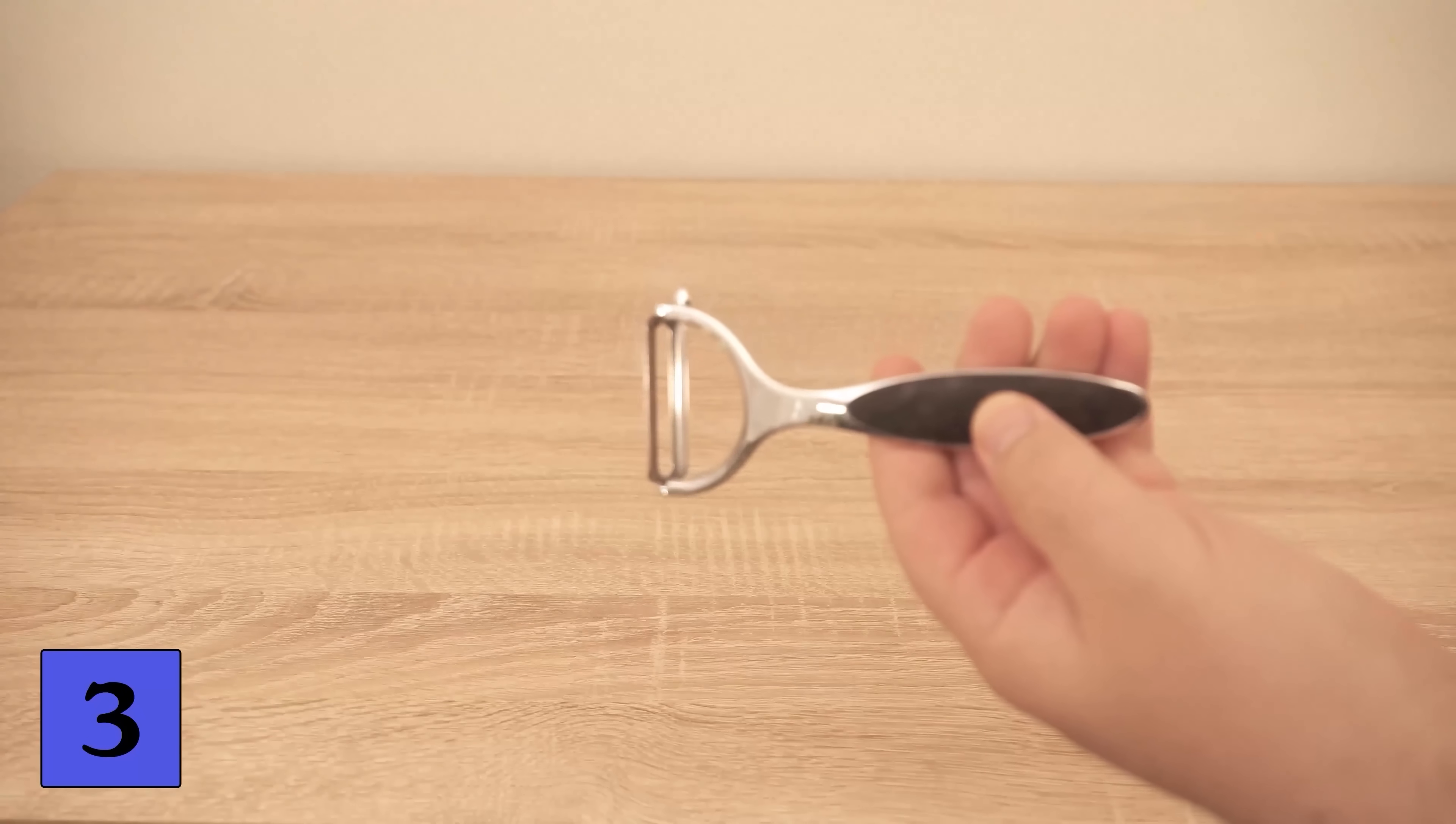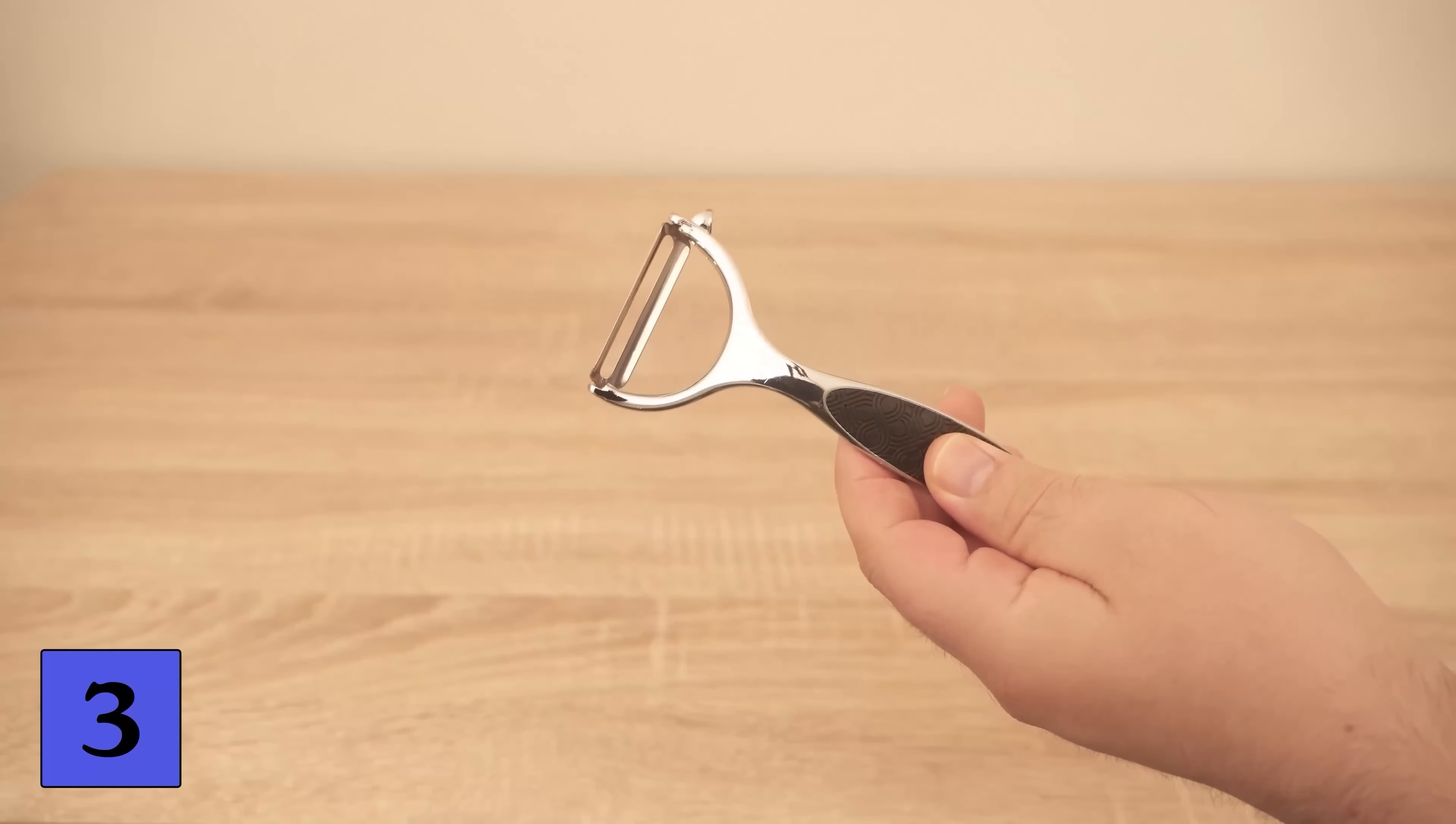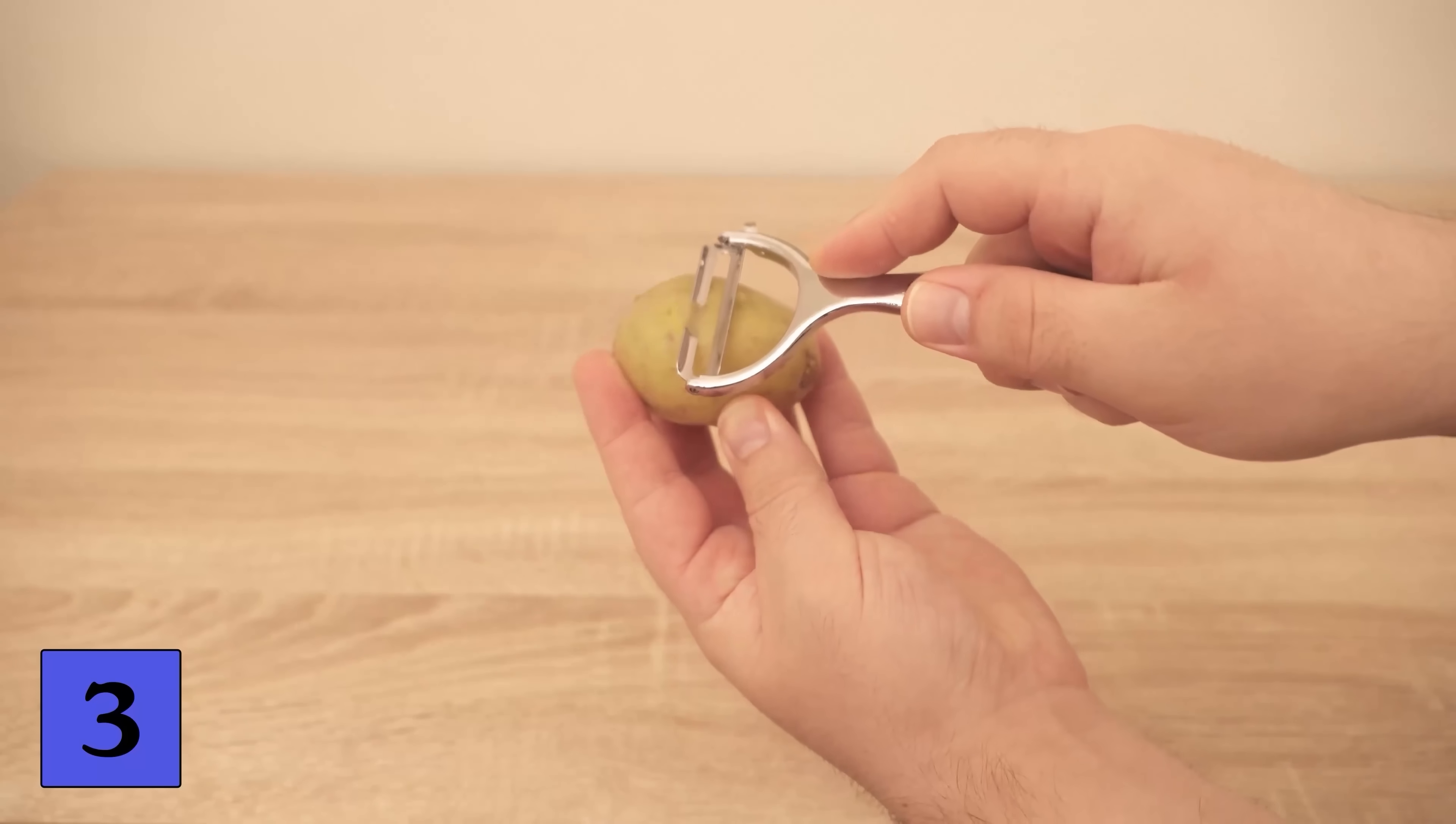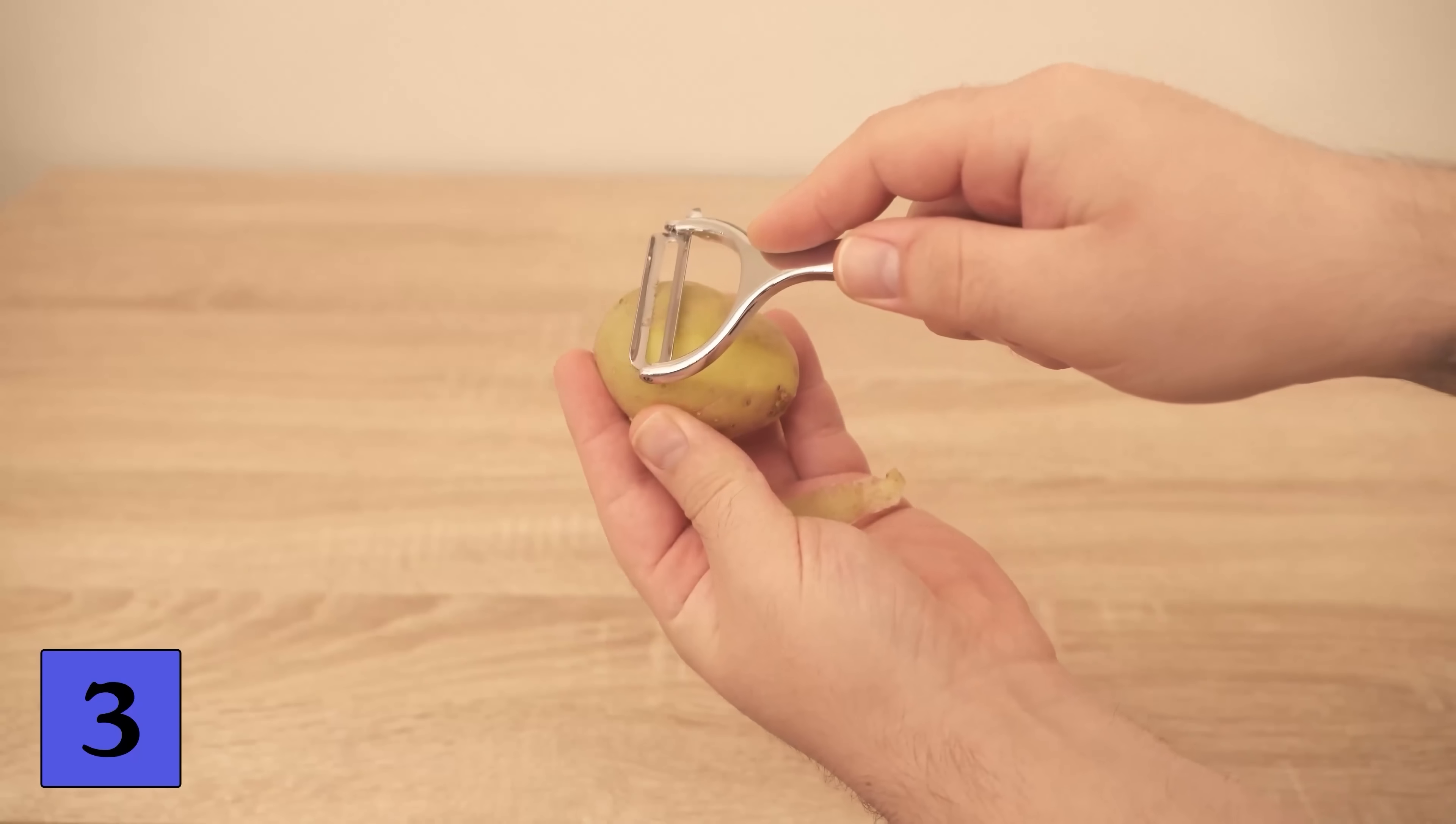Another thing that many people use incorrectly is a peeler. Surely you have one at home to peel vegetables or potatoes. But did you know that there is a much simpler method? Most people probably use it by pulling it from the top down, then putting it down and pulling it from the top down again.